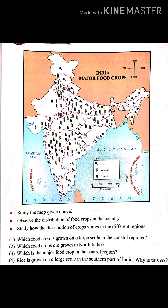Study the map given above. Observe the distribution of food crops in the country and study how the distribution of crops varies in different regions. Rice is grown on a large scale in the coastal part of India. Food crops like wheat and jowar are grown in North India, and wheat is the major food crop in the central region.